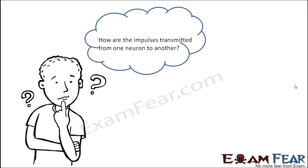Now there is another question: how are impulses transmitted from one neuron to another? So far we were talking about only one neuron — how impulse conduction takes place along the length of the axon. That is now clear. But how the impulses are transmitted from one neuron to another neuron — specifically, how the process of jumping of impulses from the axon endings of one neuron to the dendrites of the other neuron takes place — that is what we will study next.